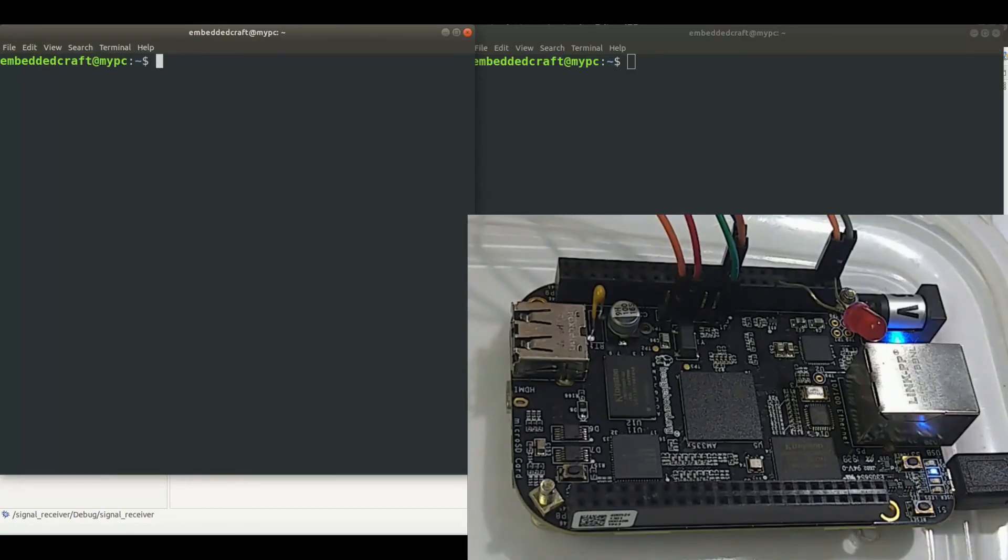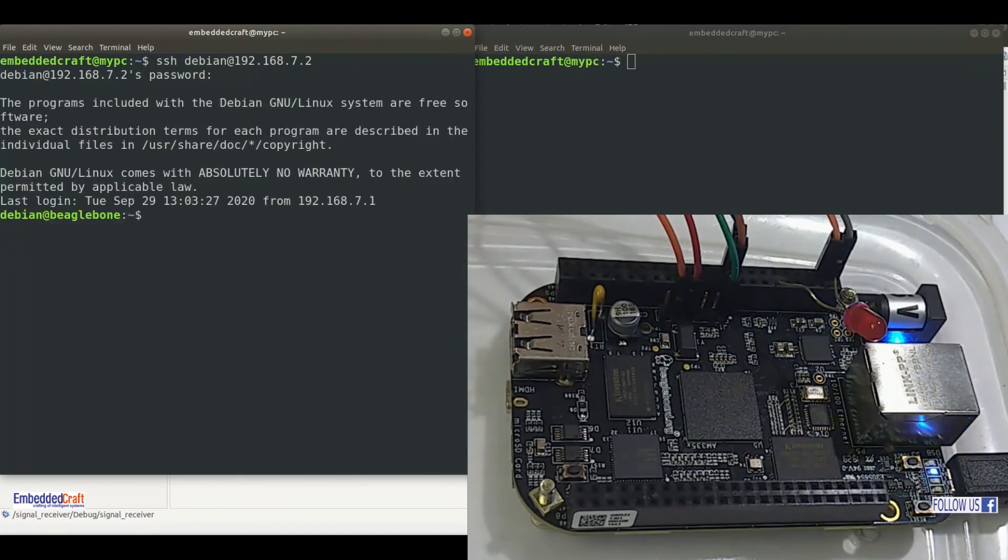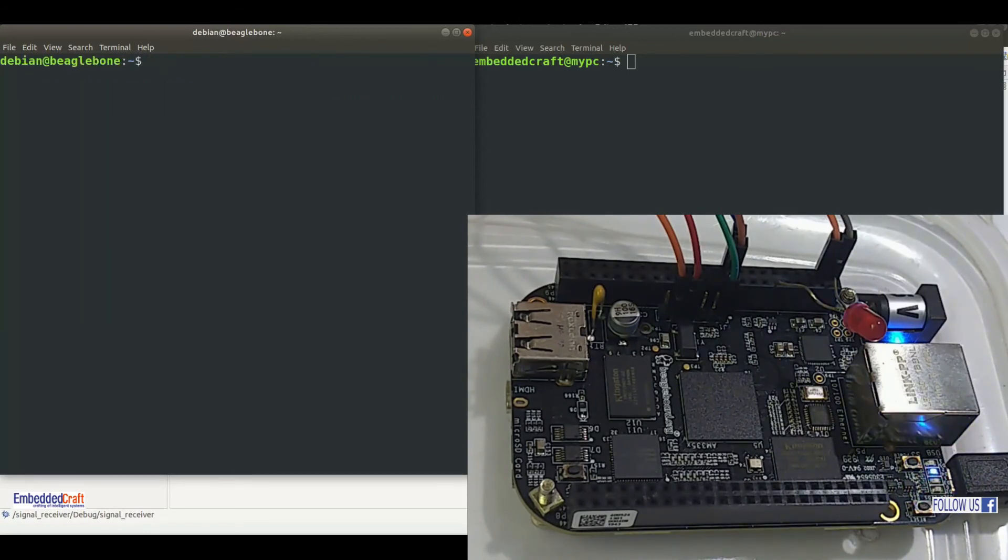Same way we can transfer signal receiver file. Let us do SSH login to our board. Type SSH, Debian at the rate of board IP address. Enter password for Debian user. Now we are on our target board. Type ls here and we have our signal receiver and signal sender files. We have to review whether we have GPIO60 already exported or not. Type ls and root sys class GPIO.